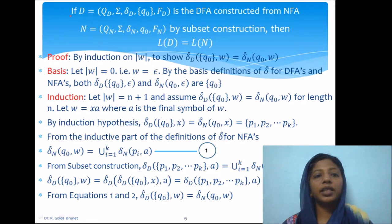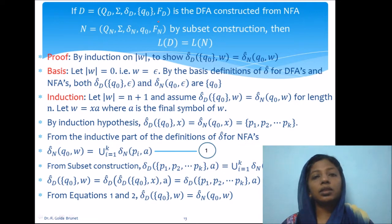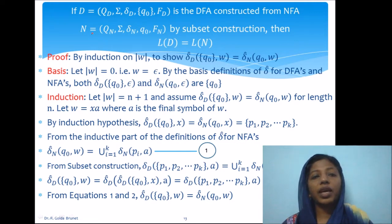Let us formally prove that the DFA constructed from an NFA is indeed equivalent to the NFA we started with. The theorem states: if D = (QD, sigma, deltaD, Q0, FD) is the DFA constructed from NFA N = (QN, sigma, deltaN, Q0, FN) by subset construction, then the language of the DFA is equal to the language of the NFA.